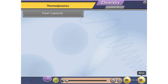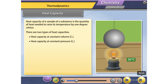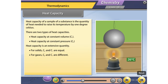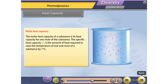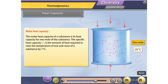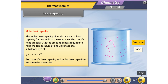Heat capacity of a sample of a substance is the quantity of heat needed to raise its temperature by 1°C. There are two types: heat capacity at constant volume and heat capacity at constant pressure. Heat capacity is an extensive quantity. For solids, Cₚ and Cᵥ are equal; for gases, Cₚ and Cᵥ are different. Heat capacity is directly proportional to the amount of substance. The specific heat capacity is the amount of heat required to raise the temperature of 1 unit mass of a substance by 1°C, given by Q = C × m × ΔT. Both specific heat capacity and molar heat capacities are intensive quantities.